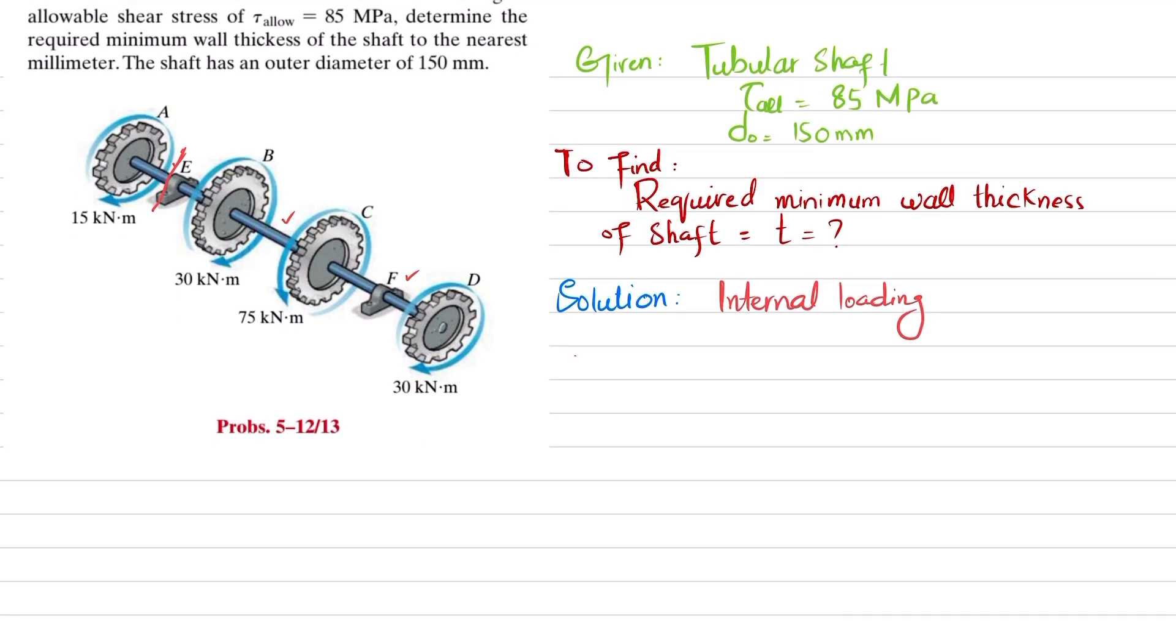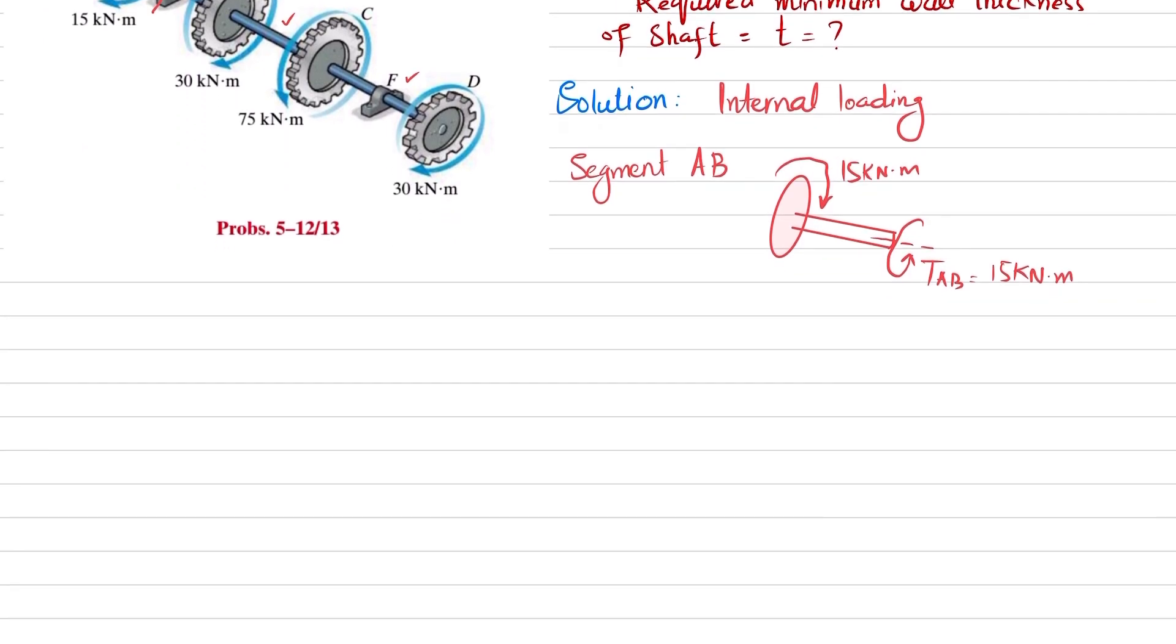For segment AB you have to draw the free body diagram. So if this is your gear, this is your shaft. The torque on this gear is given as 15 kilonewton-meter. In order to keep it in balance, your applied torque T in segment AB will be also equal to 15 kilonewton-meter.